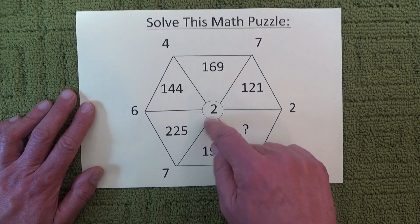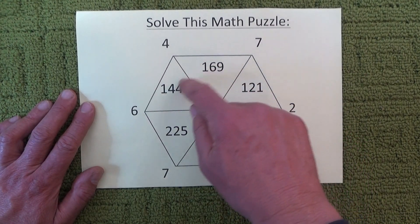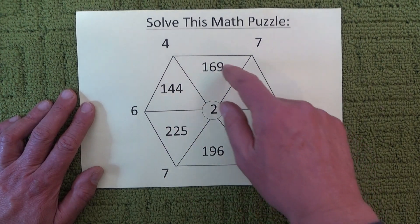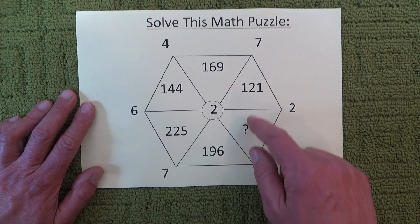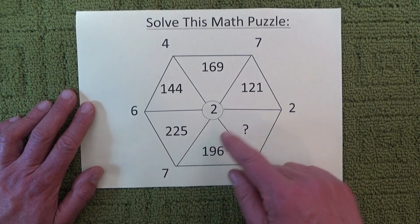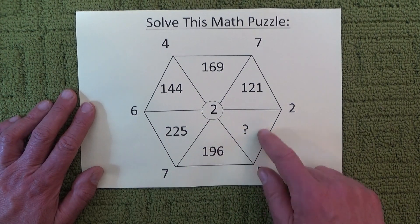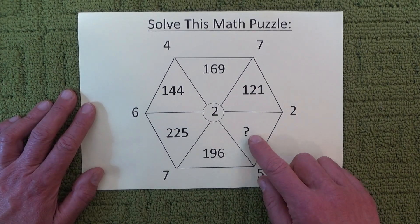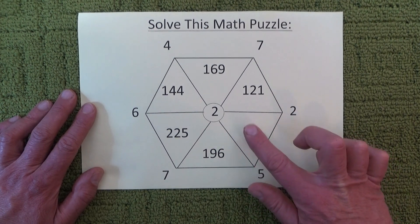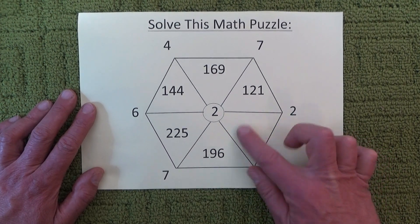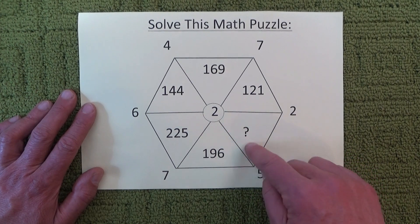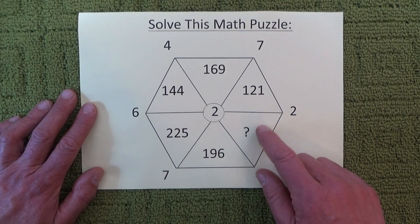One number right in the middle of the hexagon and then the rest of the hexagon is broken down into six segments with a number in each of the segments except for this segment here where the number has been replaced by a question mark. So to solve this puzzle we need to find the number that belongs in this segment here.